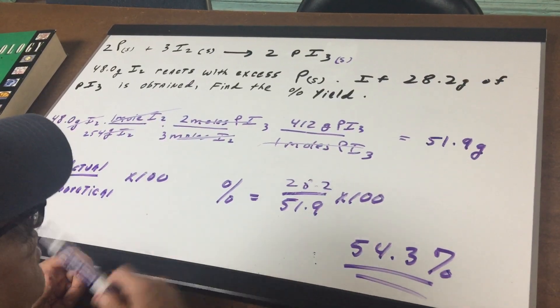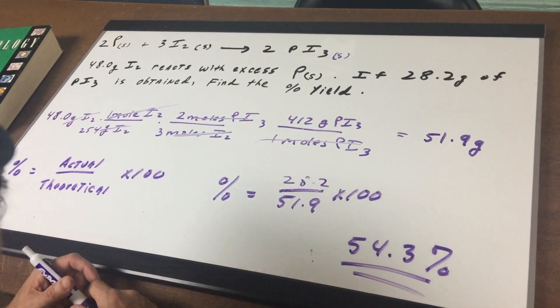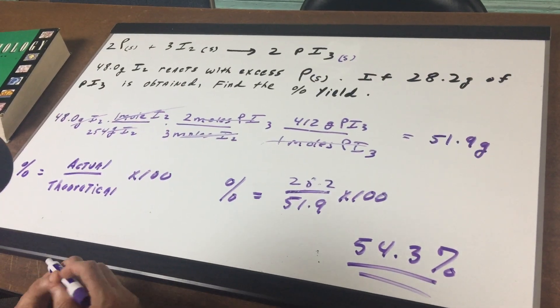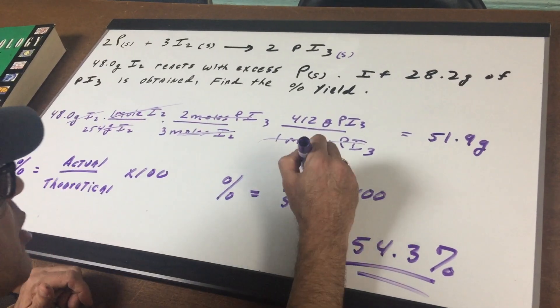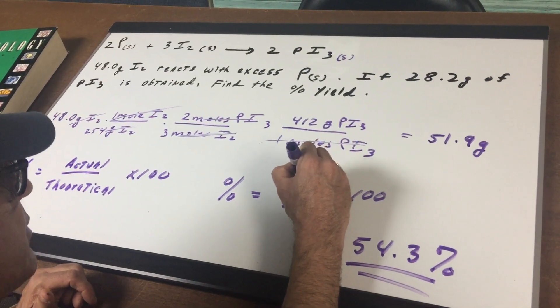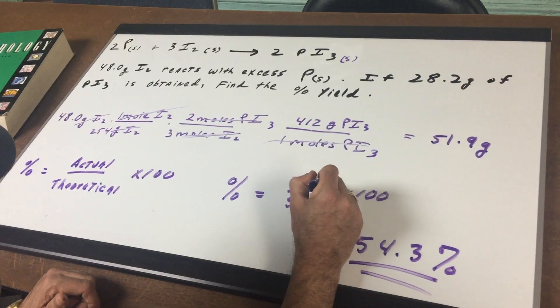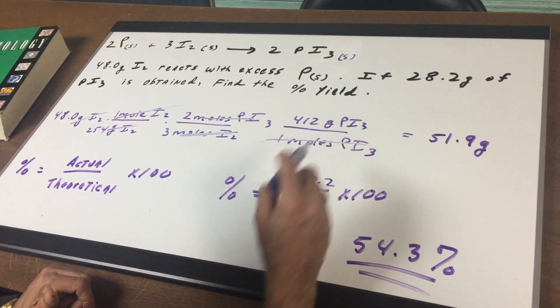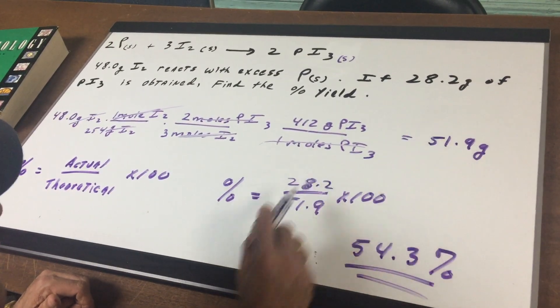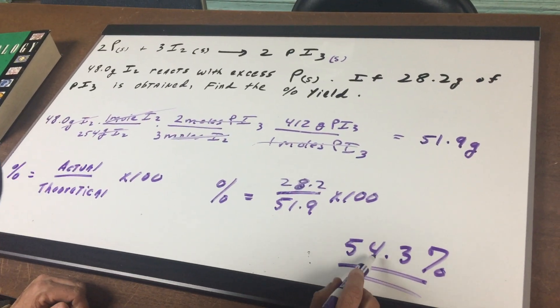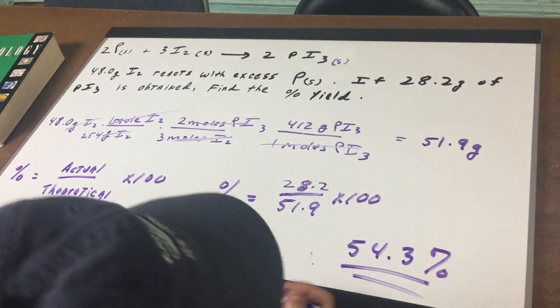On the actual test, the numbers will be much nicer. So don't be too worried about the numbers. The percent yield is the actual divided by the theoretical times 100. So what we're going to do is we are going to put in the numbers, the actual yield is 28.2 divided by the 51.9, that was our theoretical times 100, and we get 54.3%.